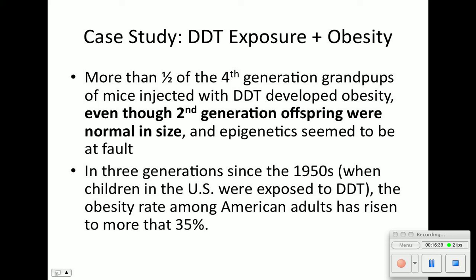They looked at Americans and noted that the obesity rate from the 1950s has increased — and that could be due to other factors too — but they are looking specifically at people who were exposed to DDT. DDT most likely alters the genes that affect insulin, metabolism, and other related functions.